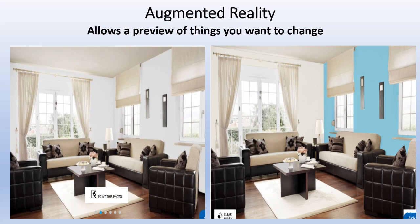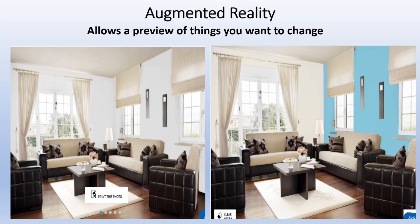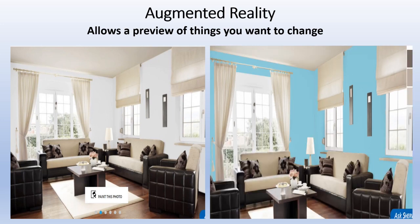Augmented Reality allows a preview of changes you want to make. For example, Sherwin-Williams has an augmented reality feature where you take a picture of your walls, outline the wall you want to paint, and it gives you a nice view of what it's going to look like. You can paint one wall blue, leave another white, or change multiple walls to different colors and get a good preview.